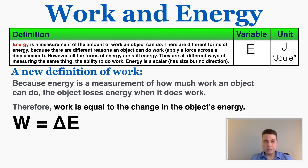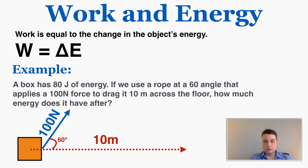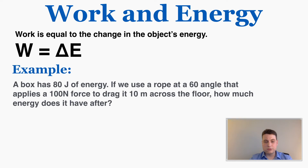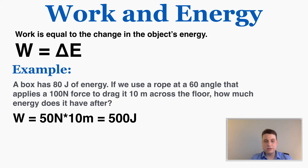Here's an example using that equation. A box has 80 joules of energy, and we use a rope at a 60-degree angle that applies a 100-newton force to drag it 10 meters across the floor — how much energy does it have after? The component of the force parallel to the displacement is cosine of 60 degrees, which is one-half, times 100 newtons, which is 50 newtons. So 50 times 10 meters gives a work done of 500 joules.